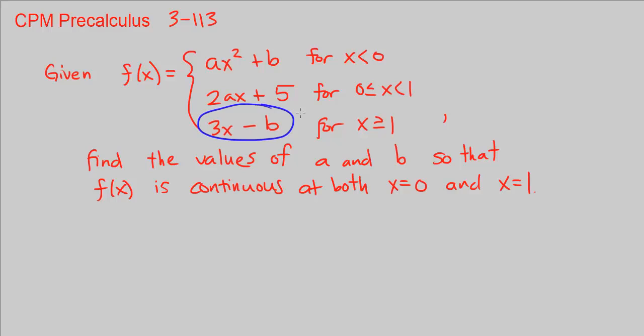And finally 3x minus b for x is greater than or equal to 1. So that's just at 1, everything to the right of 1.